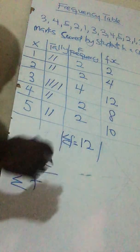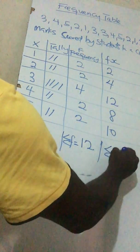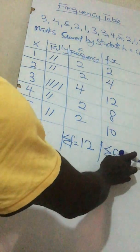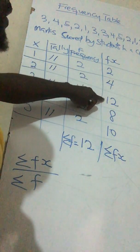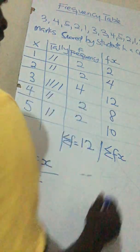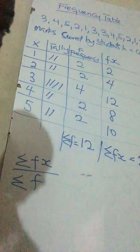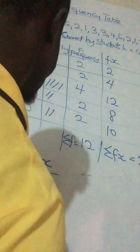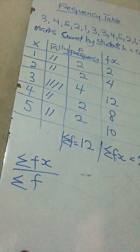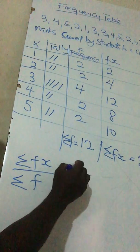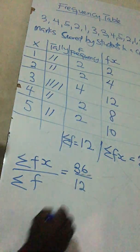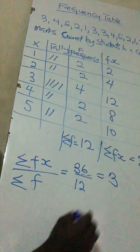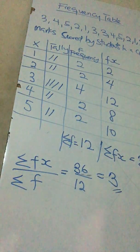We write the fx column and then add everything — sigma fx. So 2 plus 4 plus 12 plus 8 plus 10 equals 36. So sigma fx is 36. The mean equals sigma fx over sigma f, which is 36 divided by 12, which equals 3. So the mean is 3.